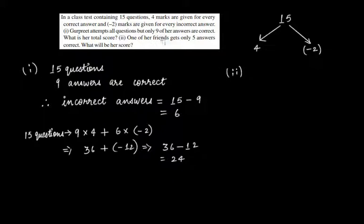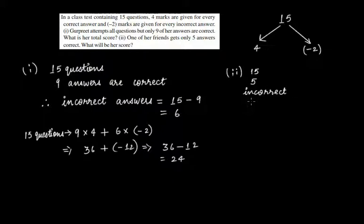Now the second part of this question: one of her friends gets only 5 answers correct. So 15 is the total number of questions attempted and 5 questions are correctly attempted. Therefore, the number of incorrect answers or incorrectly attempted questions will be 15 minus 5.